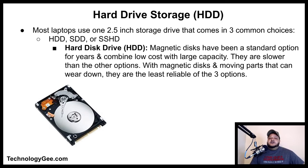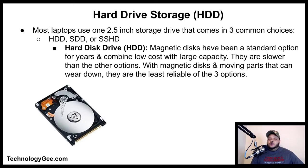The first option is the HDD, the hard disk drive. These magnetic disks have been a standard option for years and combine low cost with large capacity. However, they are slower than the other options, with magnetic disks and moving parts that can wear down, making them the least reliable of the three options.